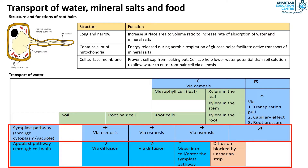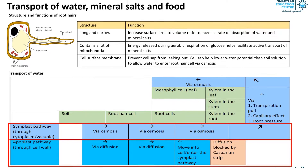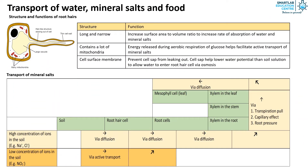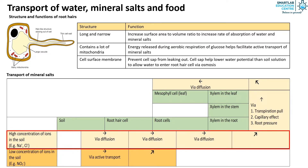Water then enters the mesophyll leaf via osmosis. As for mineral salts, if the concentration of mineral salts in the soil is higher than the cell sap, these minerals would diffuse into the root hair cells. The adjacent cell would have a lower concentration than the root hair cell, and thus minerals will diffuse down a concentration gradient cell by cell until it reaches the xylem.